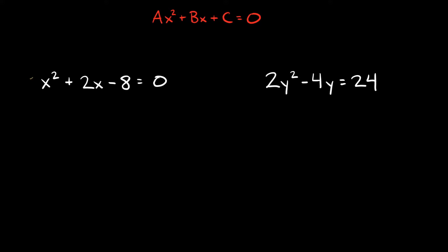We have a leading coefficient of just 1 right there. So I can write my parentheses, and since we have x², I know I have an x here and an x here. Then to figure out the other numbers I need to look at my last number — my c.